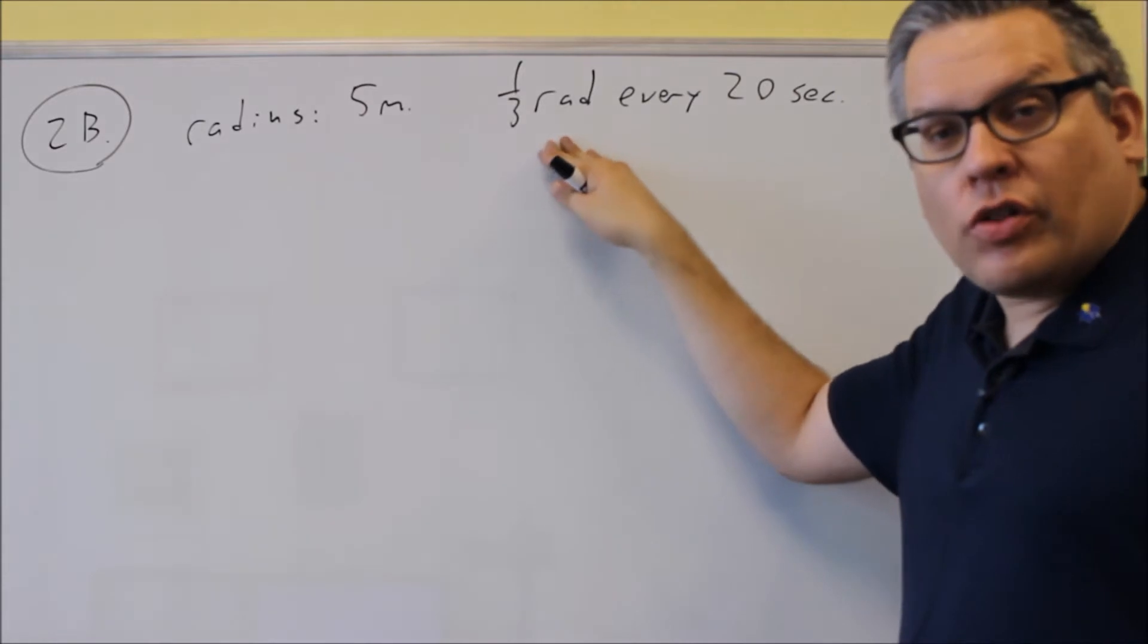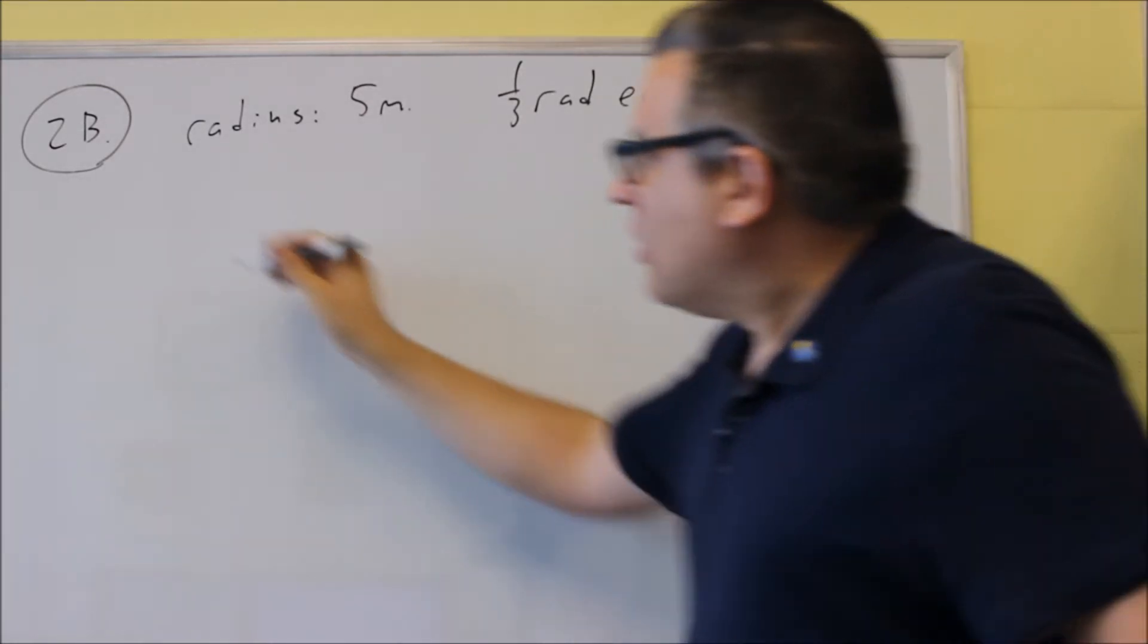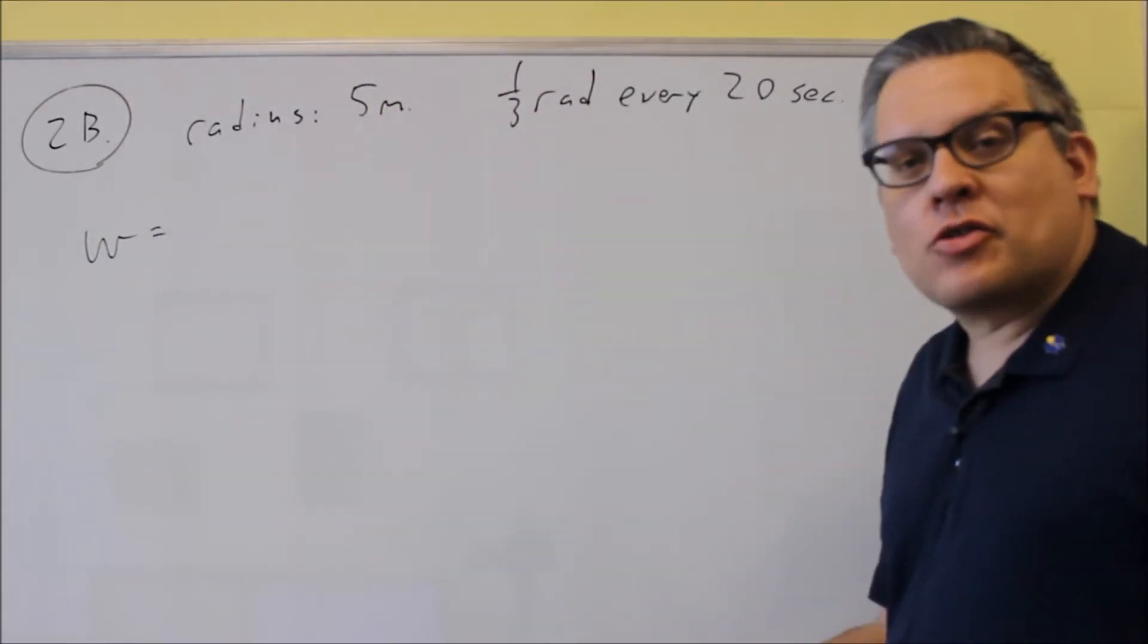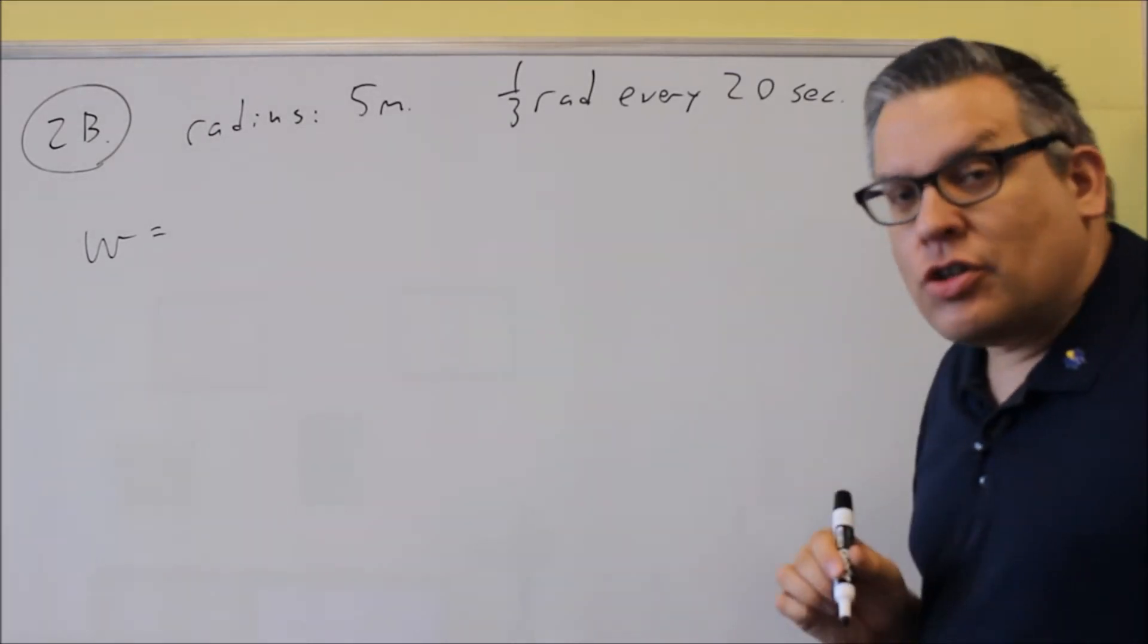And so it's going around 1/3 radian every 20 seconds. They want us to express the angular speed, so we're going to find omega. But they want it in terms of radians per minute. And we have seconds here, so we have to change the unit of time.